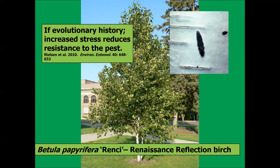Dan Herms and others have done presentations on this: if there's no evolutionary history, increased stress reduces resistance to the pest. This is something many of us learned in college — if you keep the tree healthy by providing adequate resources, not luxurious amounts, that tree can defend itself. Trees do defend themselves against a number of threats. If the tree is stressed, it's more vulnerable. We see this with paper birch — it seems to do very well against bronze birch borer until it becomes stressed or begins declining from old age. Then the bronze birch borer does what it's supposed to do: it's nature's recycler.